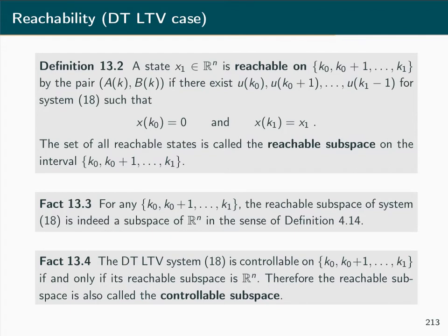Fact 13.4 states that the discrete time linear time varying system is controllable on a discrete time interval if and only if its reachable subspace is equal to the entire state space Rⁿ. This is the reason why the reachable subspace is also called the controllable subspace.